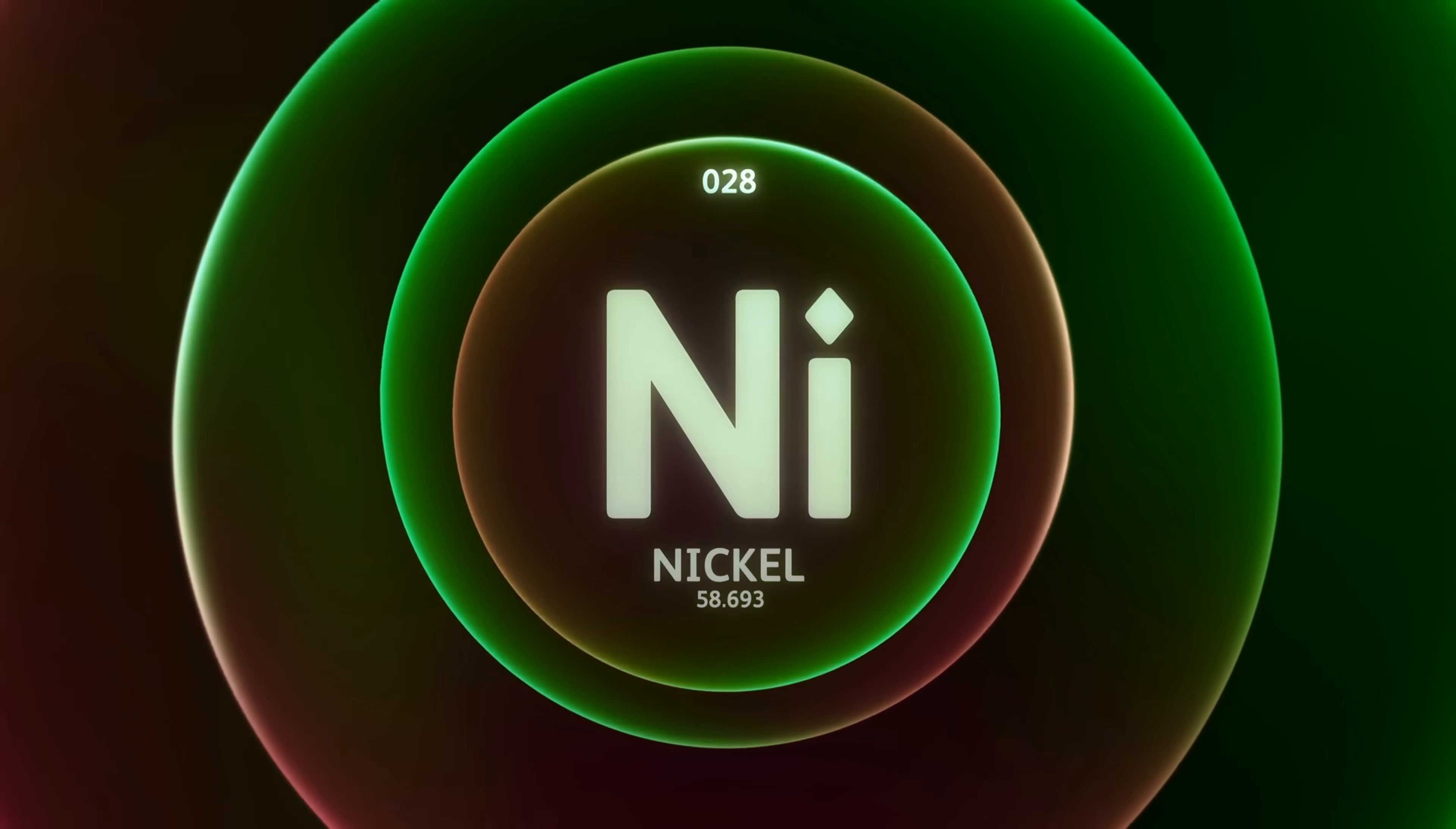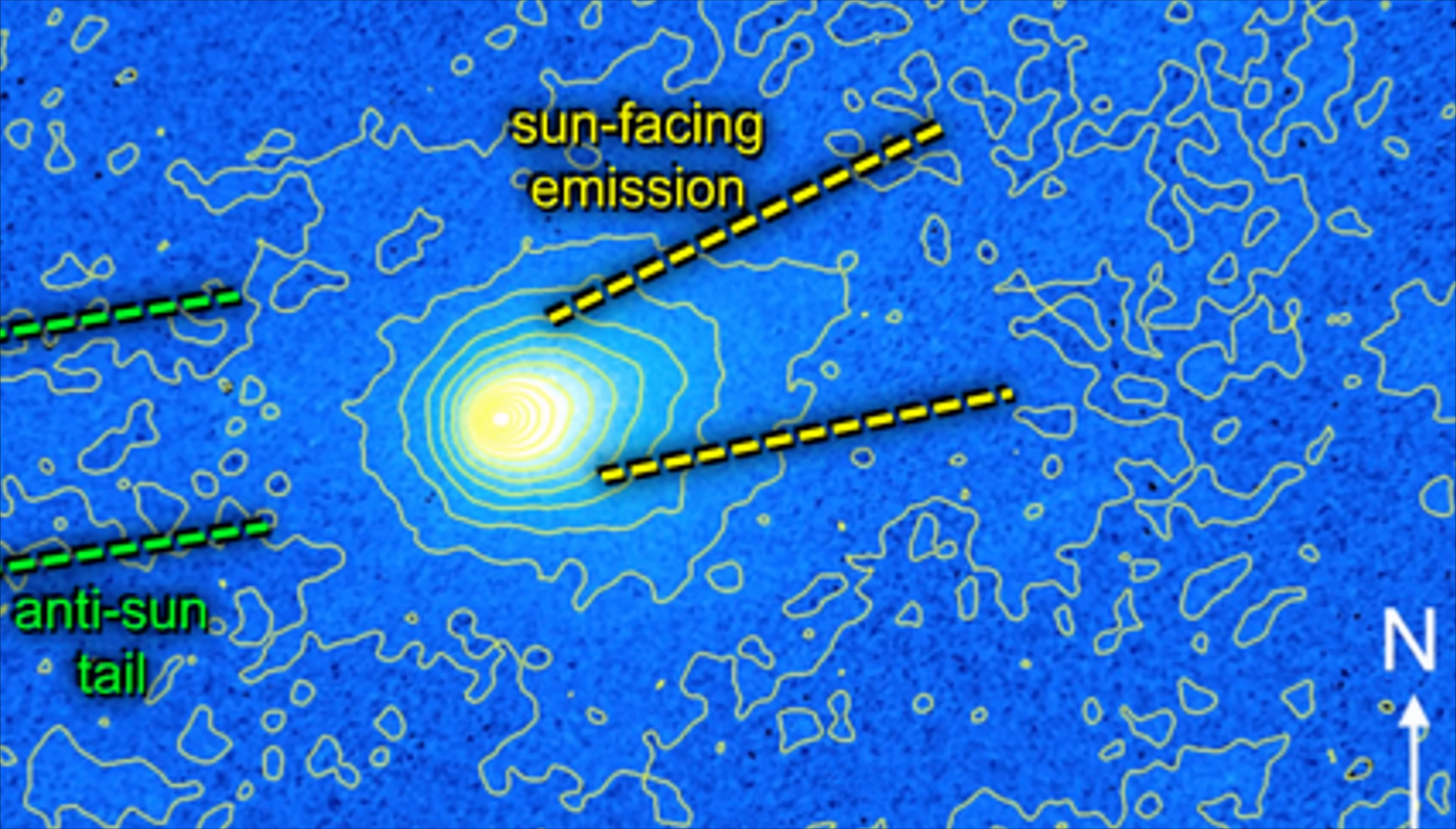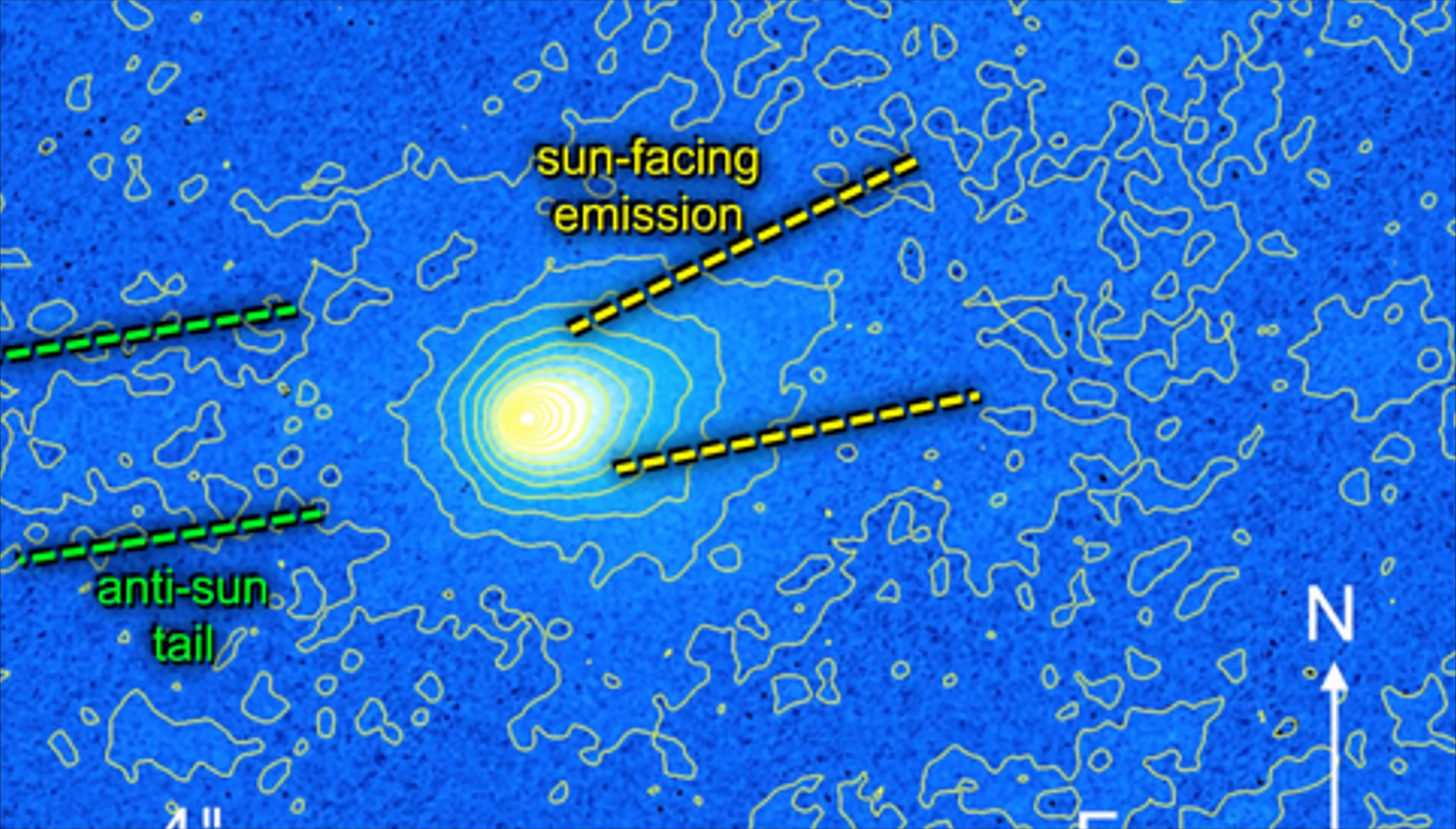If propulsion systems were once active on 3i Atlas, but later shut down, the nickel traces could be the residue of worn engine components. Although direct spectrographic evidence of thrusters operating recently does not exist, the nickel anomaly remains a tantalizing clue.